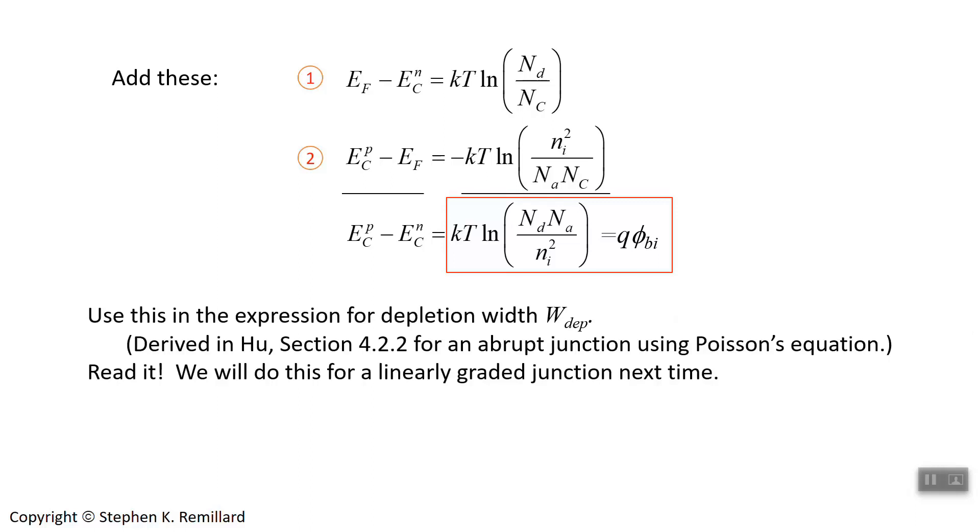In your reading, section 4.2.2, a derivation was done for the depletion width, but specifically for an abrupt junction—that is, one where the donor doping suddenly stops and the acceptor doping suddenly starts. Read that section. I'm not going to repeat it here. Next time, we're going to do our own derivation, not for that, but for a linearly graded junction—that is, one where the doping concentrations change from acceptor to donor gradually.